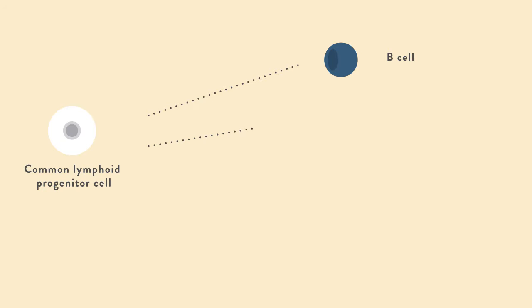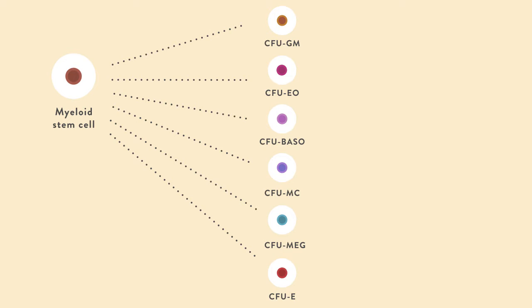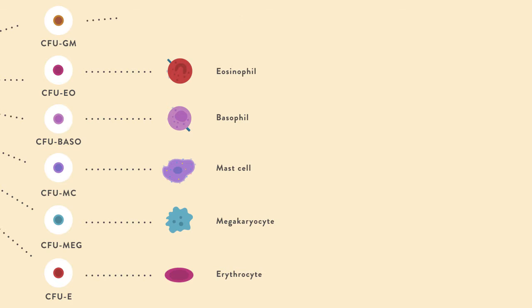The myeloid stem cell produces various colony-forming units, whether it be the GM variant, eosinophil variant, basophil variant, mast cell variant, megalocaryocyte variant, or erythrocyte variant. The erythrocyte lineage produces red blood cells. The megalocaryocytes produce megalocaryocytes. Mast cell produces mast cells, basophils, and eosinophils. The GM, which is produced by granulocyte macrophage colony-stimulating factor, produces monocytes and neutrophils. These can further differentiate into dendritic cells and macrophages if they come out of the monocyte lineage.